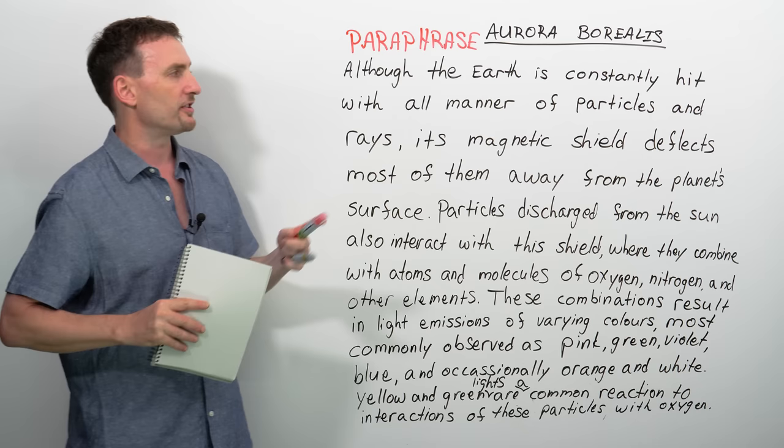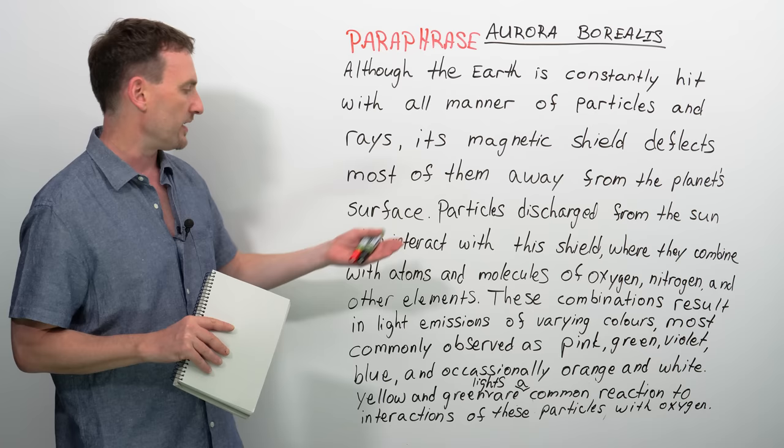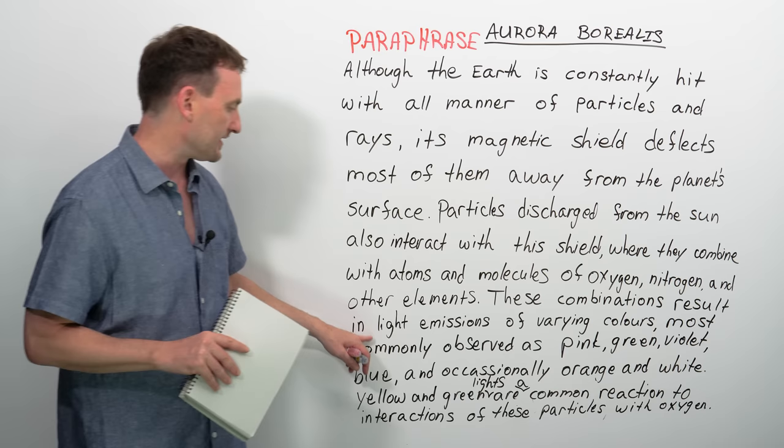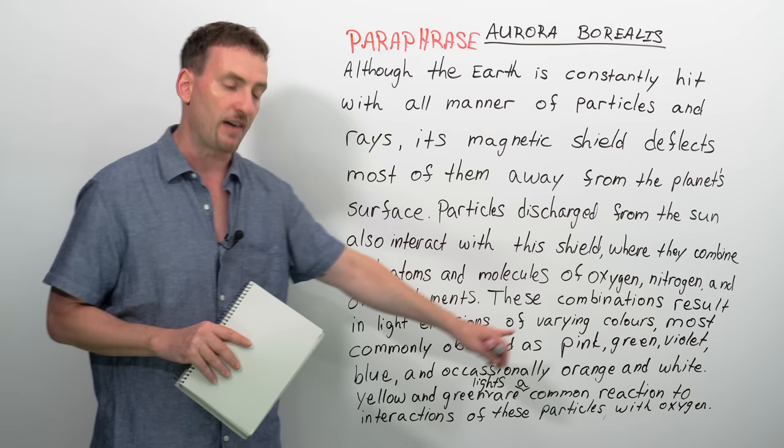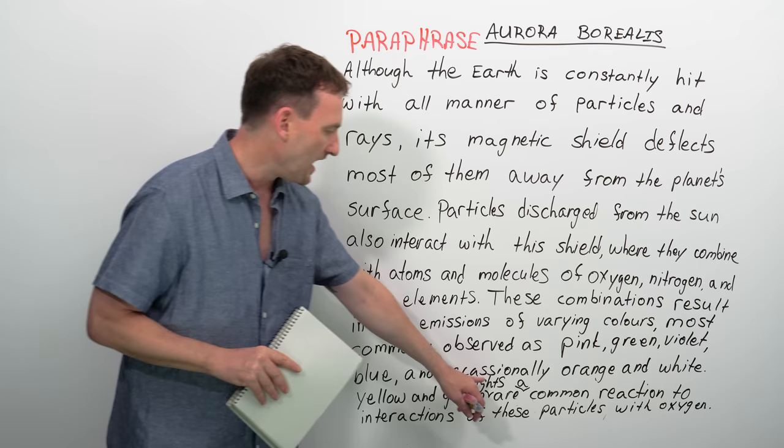Although the Earth is constantly hit with all manner of particles and rays, its magnetic shield deflects most of them away from the planet's surface. Particles discharged from the sun also interact with this shield, where they combine with atoms and molecules of oxygen, nitrogen, and other elements. These combinations result in light emissions of varying colors, most commonly observed as pink, green, violet, blue, and occasionally orange and white. Yellow and green lights are a common reaction to interactions of these particles with oxygen.